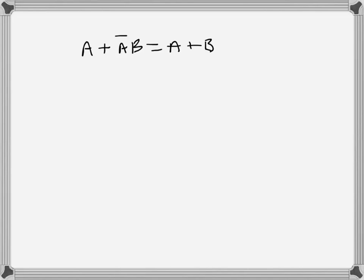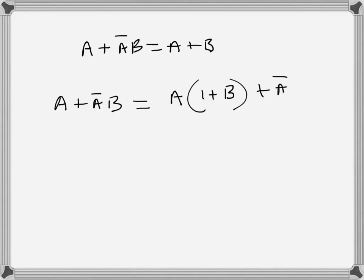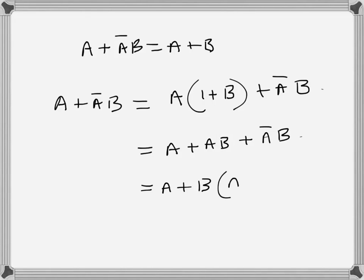The Boolean identity: a plus a-bar b is equal to a plus b. I will prove this from the left-hand side. The left-hand side is a plus a-bar b. I will multiply a with (1 + b), which gives a plus ab plus a-bar b. This can be written as a plus b(a plus a-bar), which equals a plus b — the right-hand side.